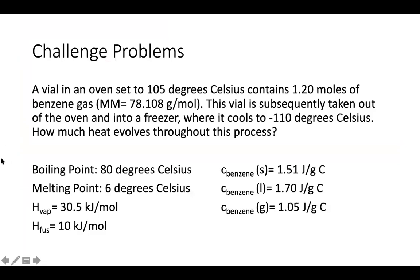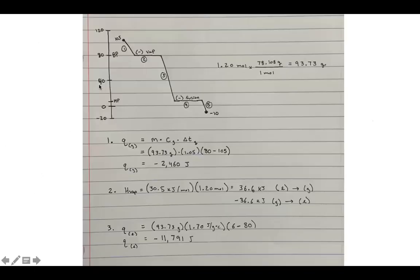Moving on to the next question — a phase change problem, similar to one done before. We're doing benzene going from 105°C down to negative 10°C. Note: the problem as written says 110°C, but that is a typo — it is supposed to say negative 10°C. Please do not use 110°C. I will post the correction on your page.